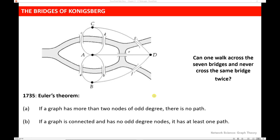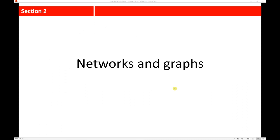Euler's discovery is interesting for a couple of different reasons. First, he showed that graphs actually have properties that are immutable. Secondly, it's interesting that he was able to solve this problem based on modeling something in the real world. And as we progress through the class, that's what you're going to see — that each graph has a story to tell based on its components.